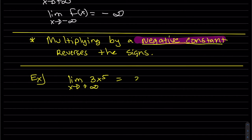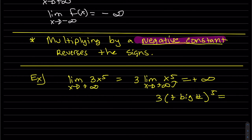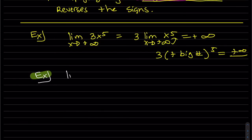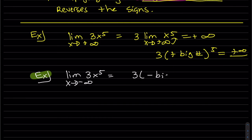For an example like 3x⁵, plugging in positive infinity: a positive big number to the fifth power times three equals positive infinity. Plugging in negative infinity: three times negative infinity to the fifth — that's five negatives — gives negative infinity. Odd power means alternating end behaviors.